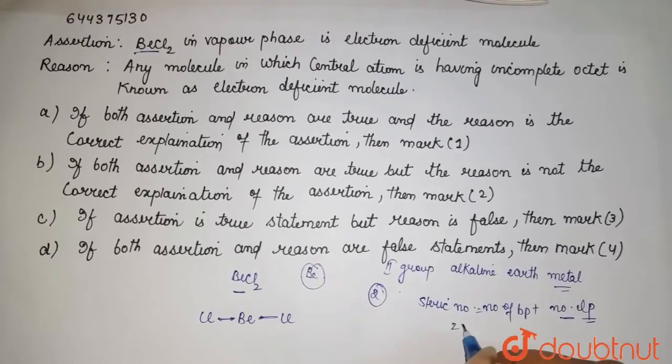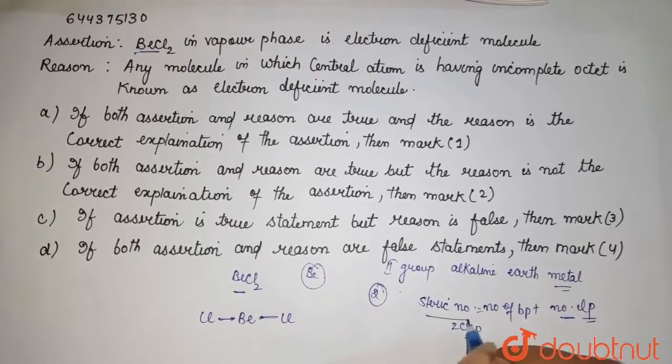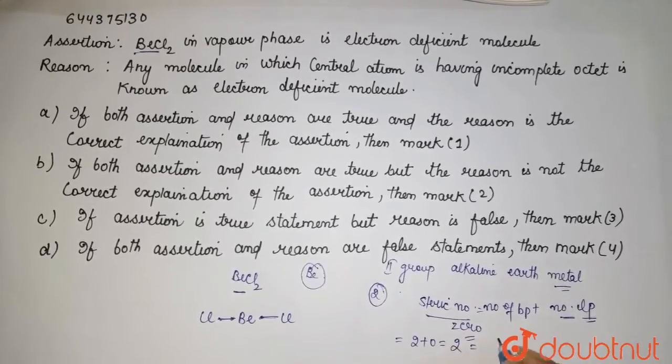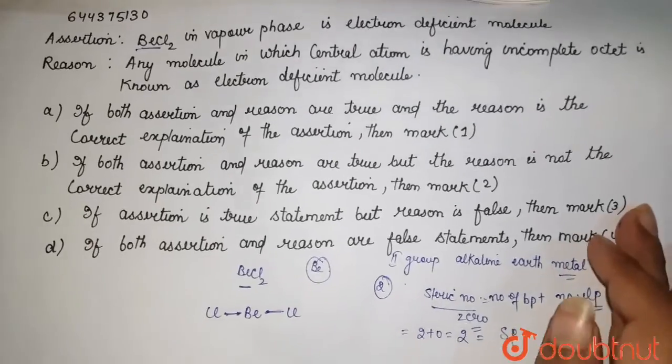Here we are having zero lone pair. So talking about your steric number, which is equal to two bond pairs, zero lone pair, which comes out to be two. And its hybridization is sp.